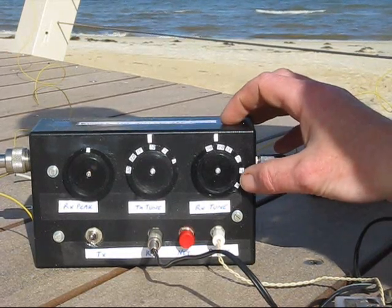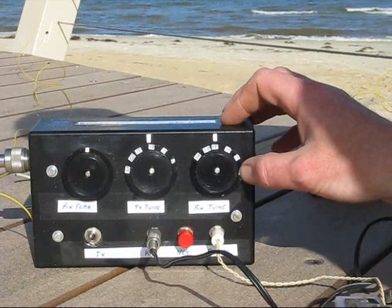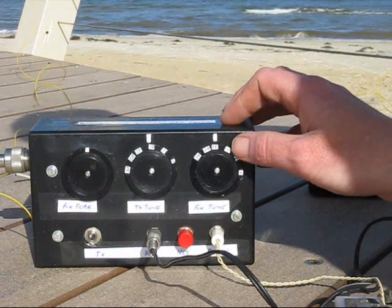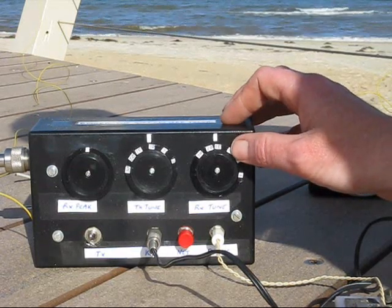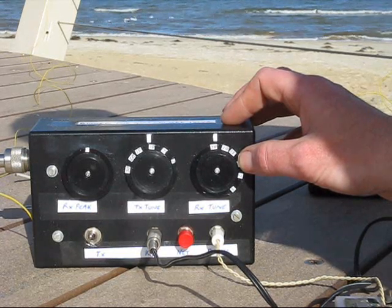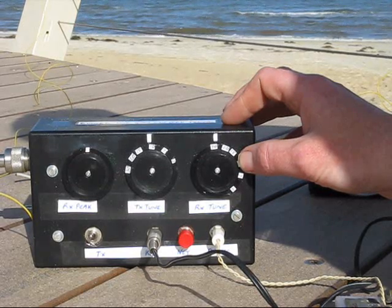The net control station verifies the calling stations can hear each other and pairs them off on another frequency. They talk amongst themselves and when finished, if they want to come back for another contact, they come back to the net control station. All this happens between around 10am and noon on Sundays.